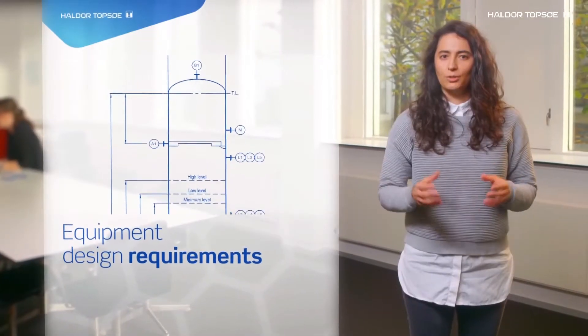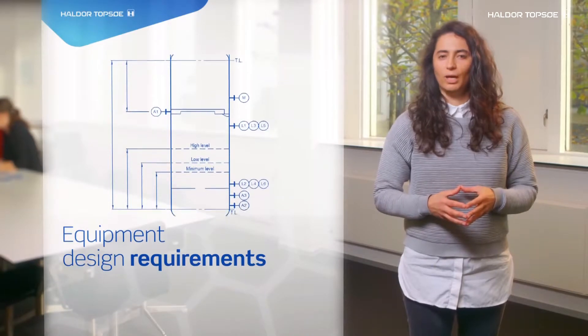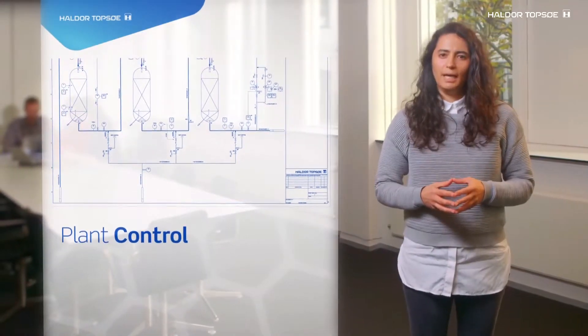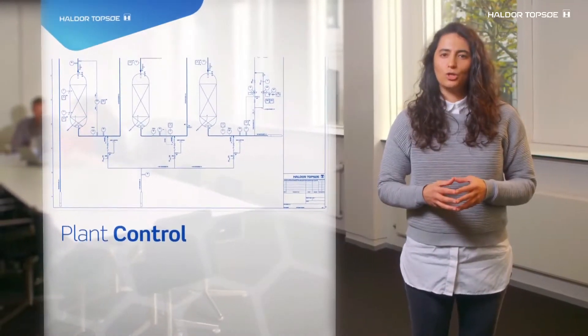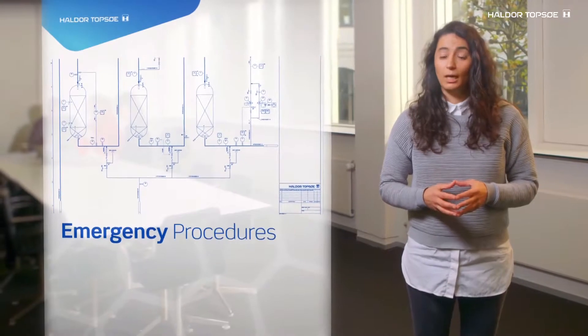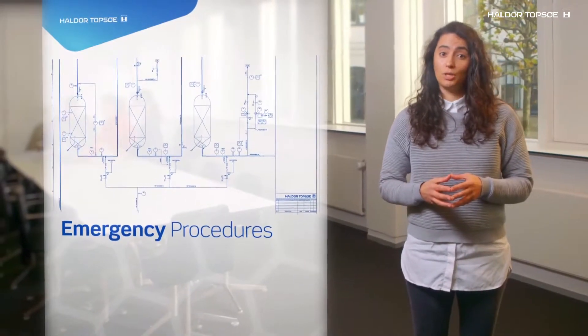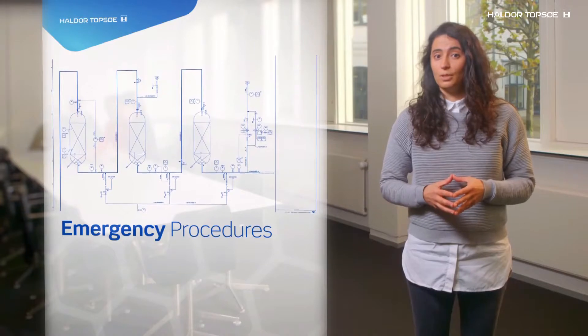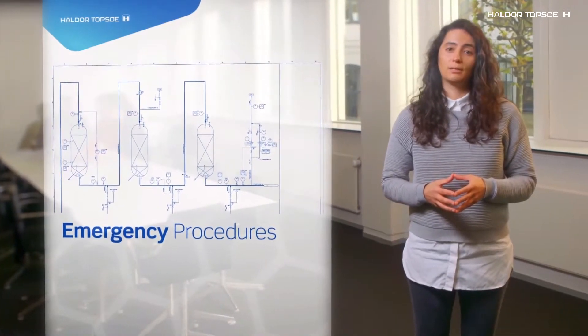We also deliver written design requirements for all pieces of equipment in the plant. In Topster we take safety very seriously, and safety is a crucial part when designing a plant. In this piping diagram we also show how the plant is controlled and how it reacts when an emergent situation arises, like for example the temperature rising in a reactor.